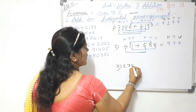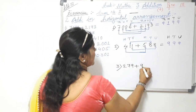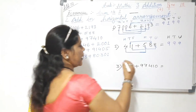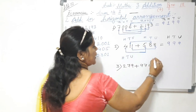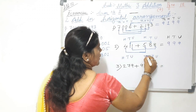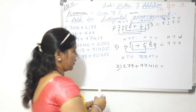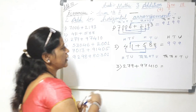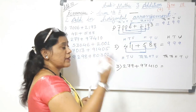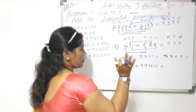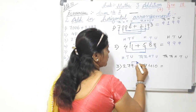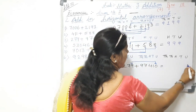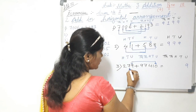The third sum is a three-digit number plus a five-digit number: two hundred and seventy-nine plus ninety-seven thousand four hundred and ten. Write the place values: units, tens, hundreds for the first number, and units, tens, hundreds, thousands, and ten-thousands for the second.